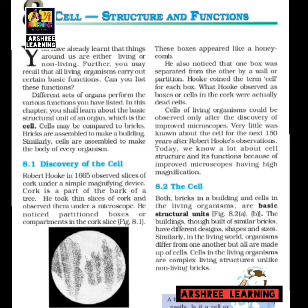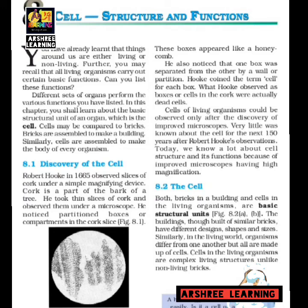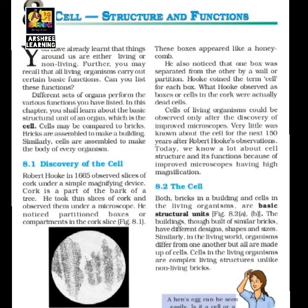Robert Hooke discovered the cell. He discovered it under a microscope. At that time there was no proper microscope; the microscope invented then was made using simple glass. During the manufacture of glass, one deformed piece behaved like a lens, and he used that lens to observe the cell.